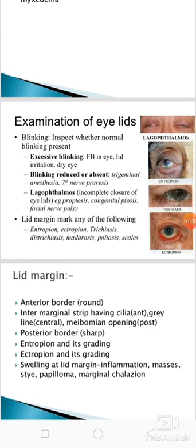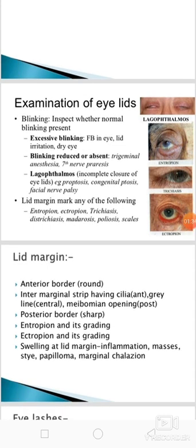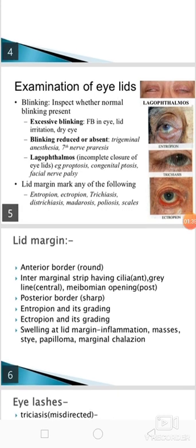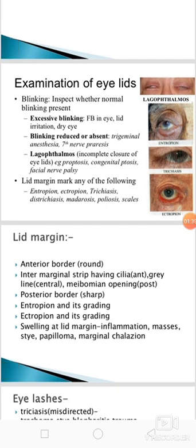Then lagophthalmos — it is an incomplete closure of eyelids. It occurs in case of proptosis, congenital ptosis, and facial nerve palsy.